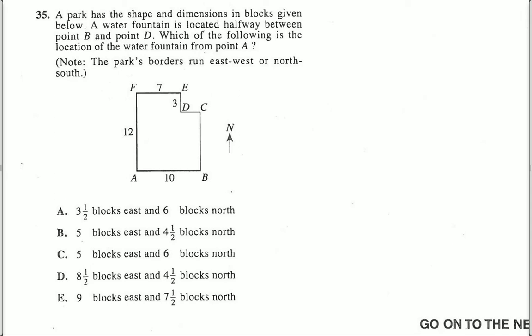Number 35. A park has the shape and dimensions in blocks given below. A water fountain is located halfway between point B and D. Which of the following is the location of the water fountain from point A?